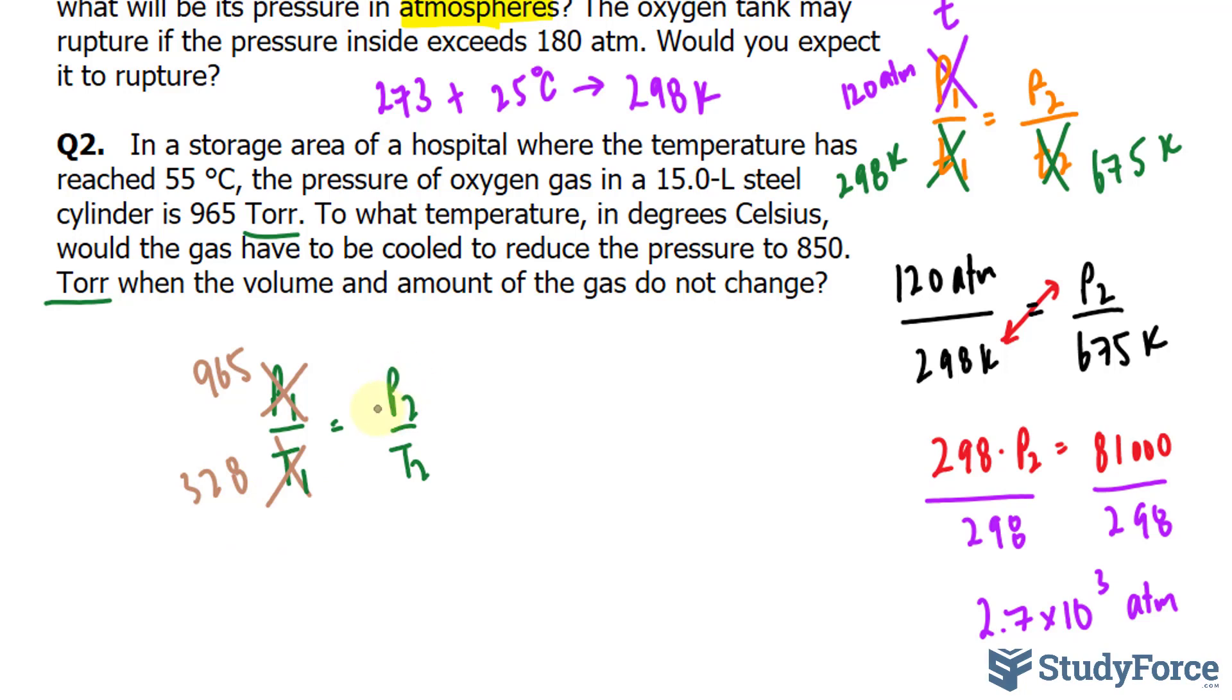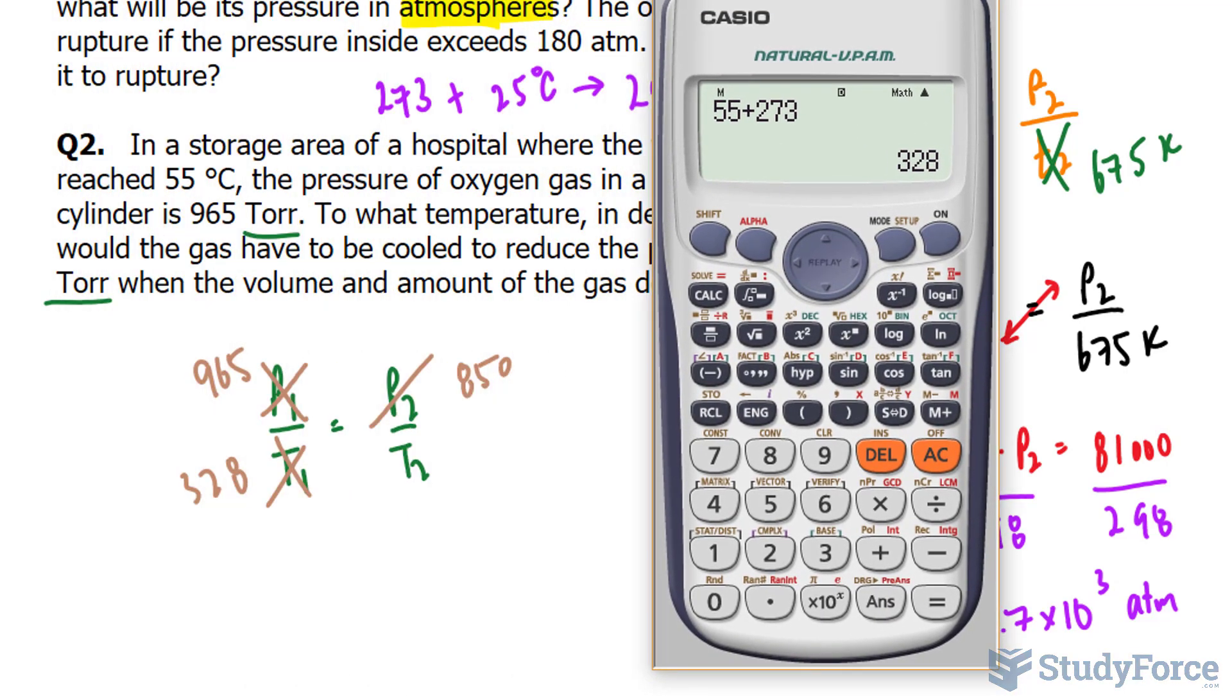P sub 2 this time is 850, and they want us to find the temperature. Let's go ahead and do that. We cross multiply, so 328 times 850, and then we divide by 965.